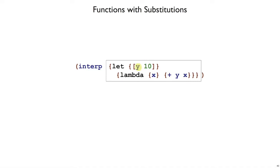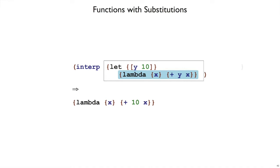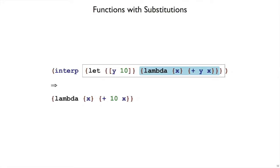So with explicit substitutions, y should get replaced by a 10 here, so the result should be this function. The lambda body just returns a function, but it's a function that has 10 in place of y. To make things fit on the slide a little better, I'm just going to move the lambda over there, but it's still the same example.